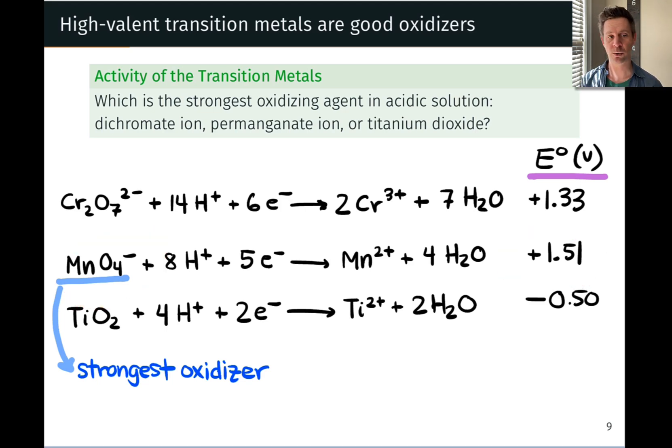Permanganate is the strongest oxidizer on the list with the most positive reduction potential. On the other side, TiO₂ is not a very good oxidizer despite the presence of oxygen in the compound. Its reduction potential is only negative 0.5 volts.